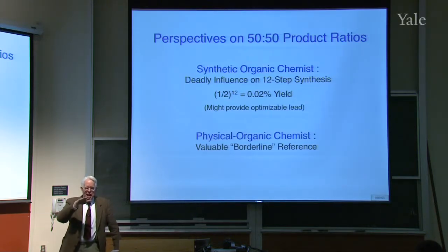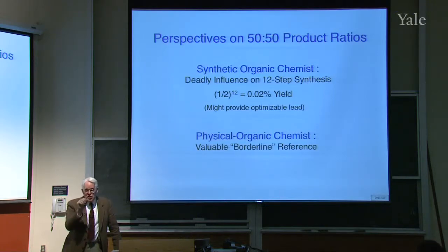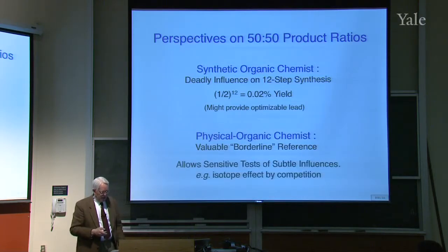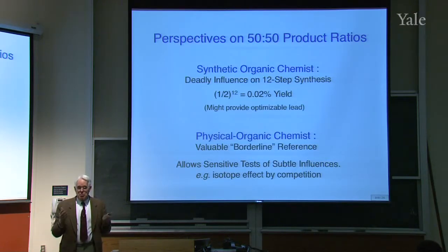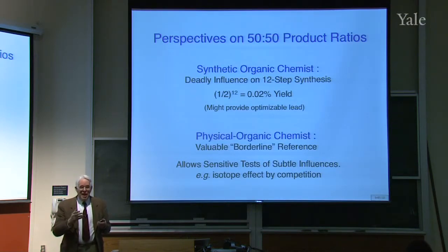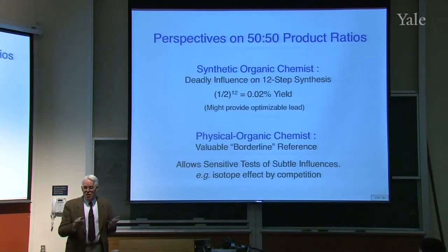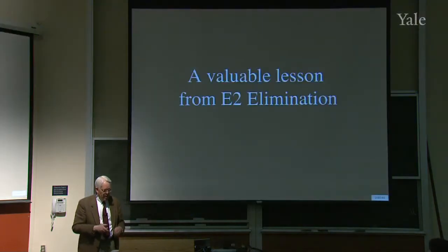Although it might be possible to have a reaction that doesn't give such a good yield, but to tinker around with it and get the yield up so it becomes acceptable in a sequence. But a physical organic chemist finds such a situation valuable because it's a borderline. There's a delicate balance between going this way and going this way. And now you can see changing this effect, changing the solvent, making it more polar, less polar, putting a methyl group on, taking one off. You can interpret small effects. So it allows sensitive tests of subtle influences.